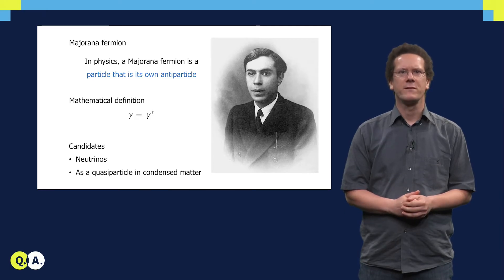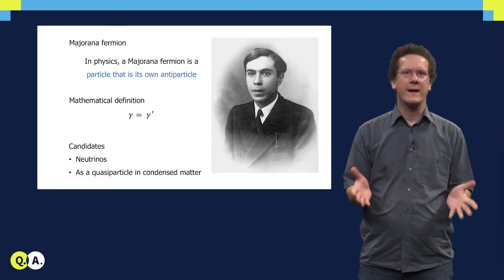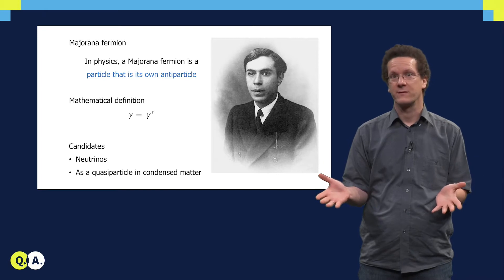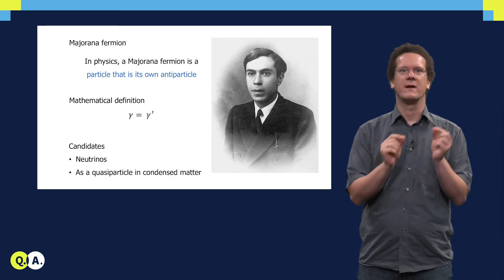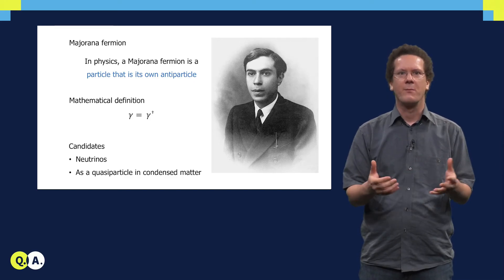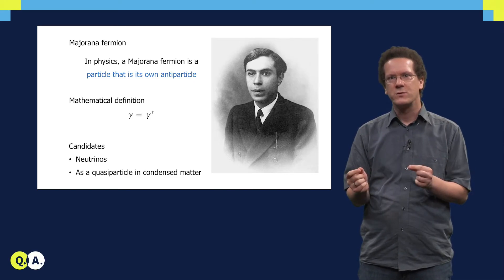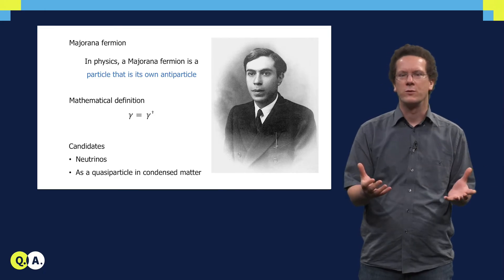To understand Majorana fermions, it is useful to first have a quick glimpse at high energy physics. In high energy physics we know that for every particle there is always an antiparticle. For example, there is an electron and a positron, a proton and an antiproton, and so forth.